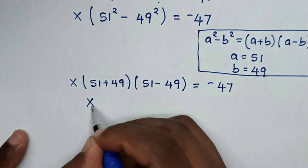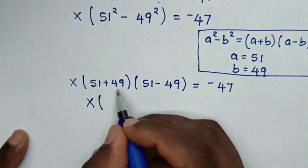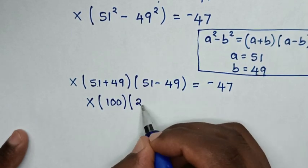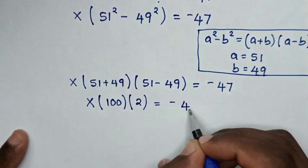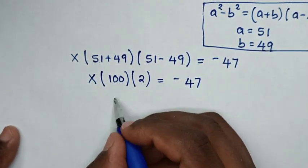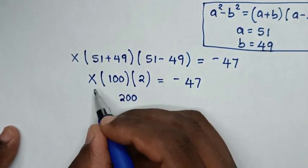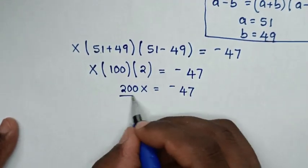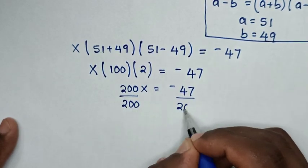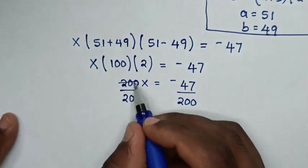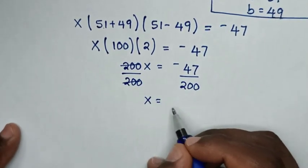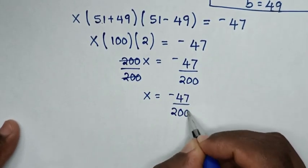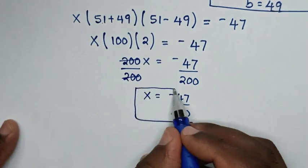Then, in the next step, it will be x times 100 times 2 is equal to negative 47. So 100 times 2 is 200, giving us 200x equals negative 47. Then we divide both sides by 200, so x is equal to negative 47 over 200. This is the final answer for the value of x.